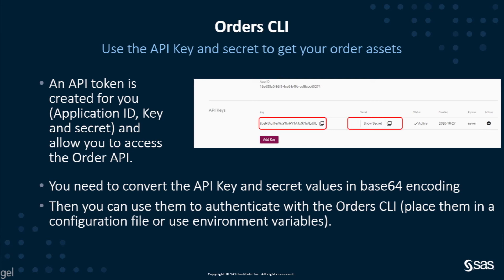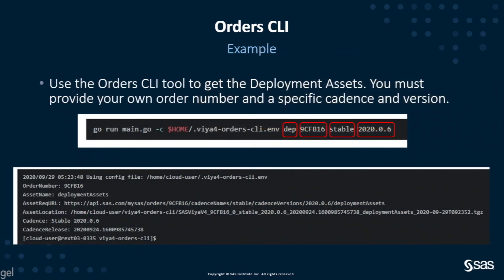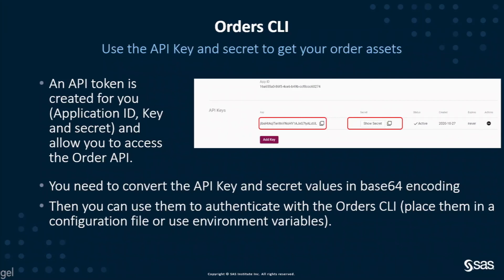What you need to do then is convert the API key and the API secret that you see on screen into Base64 encoding. You can just run the Linux command to do that, and you will have as a result a string of characters that you need to provide to the Orders CLI tool in order to download the deployment. You can provide those credentials by placing them in the configuration file or by declaring environment variables with the credentials values.